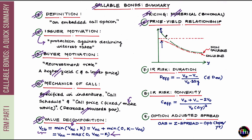The third thing to note is the convexity. The non-callable bond's P vs. Y is a convex relationship — its convexity is positive. Looking at the callable bond: in the region where interest rates are high, the P vs. Y relationship is still convex. But when you look at the low interest rate region, the curve has switched from convex to concave — so the convexity of that portion is negative. We start with positive convexity at high interest rates and switch to negative convexity at low interest rates, meaning there must be a point along this curve at which convexity equals zero.